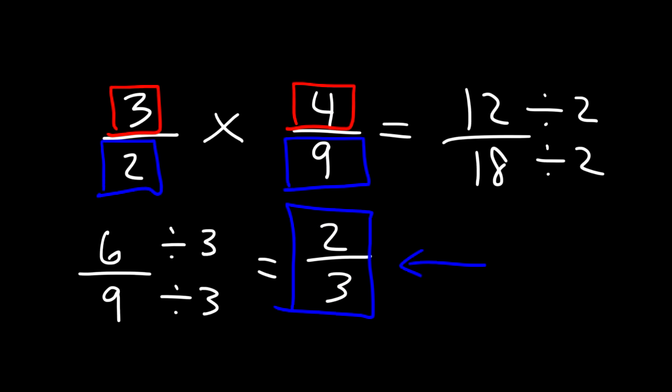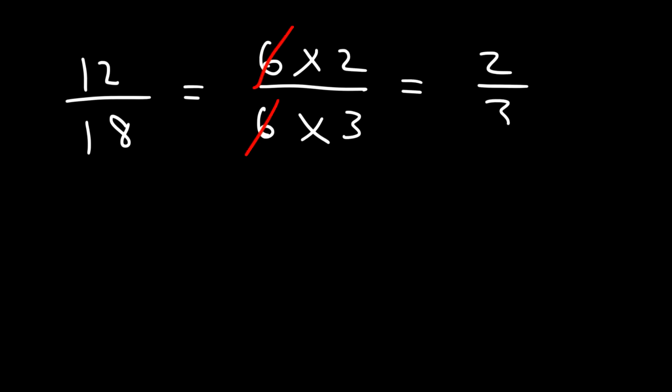Now there's another way in which you can get the same answer. So once you got to this part you could do it this way. You could say 12 is 6 times 2. And 18 is 6 times 3. So at this point you can cancel the 6. And this will give you the final answer of 2 over 3. So that's another way in which you could reduce a fraction.